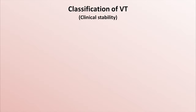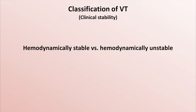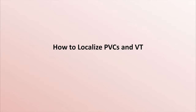VT can also be classified based on the clinical stability of the patient — hemodynamically stable versus unstable. As a very general rule, scar-based VT tends to be less stable than idiopathic VT, largely because patients in the latter category do not have ischemic heart disease or heart failure by definition. The last way in which VT can be classified is location. I've left this to the end because it is much more complicated than the preceding four classifications, and as the title suggests, everything we do to localize VT also applies to localizing the site of origin for PVCs.